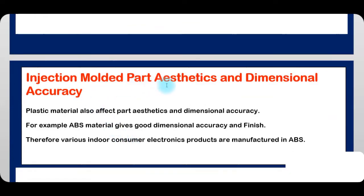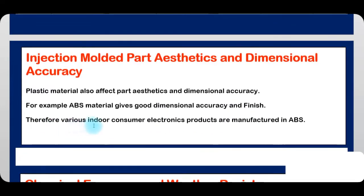Injection-molded parts — aesthetic and dimensional accuracy. Plastic material also affects part aesthetics and dimensional accuracy. For example, ABS provides good dimensional accuracy and finish, and therefore various indoor consumer electronics products are manufactured in ABS.